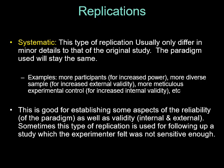Systematic replication is a type of replication that differs only in minor details from the original study, and is usually meant to enhance it. For instance, they might want more participants, more diverse samples, or more meticulous experimental control. These are aspects meant to improve the original study. For example, if the original study was only done in males in their 20s, and you wonder if the same phenomenon applies to females, you would include both males and females — that would be a systematic replication, establishing aspects of both reliability and validity.